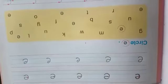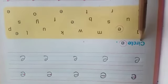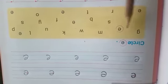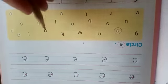Have you done? Now look at the yellow box. Circle E. Circle the letter E. Where is E? Find the letter E and then circle it.